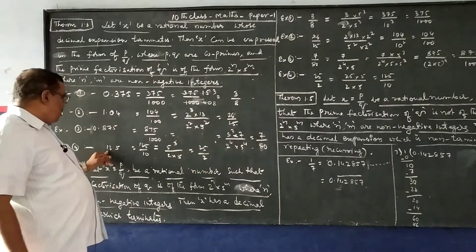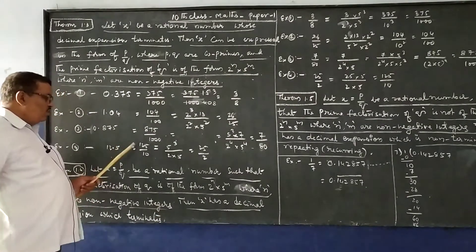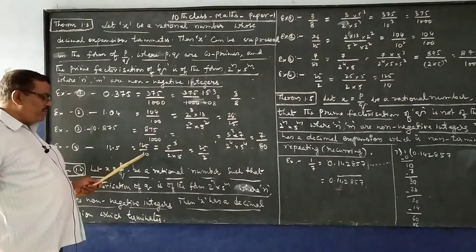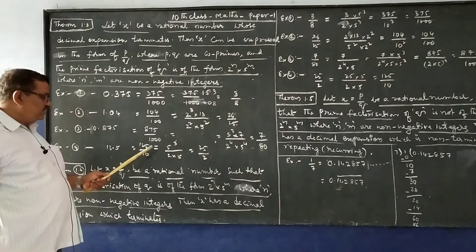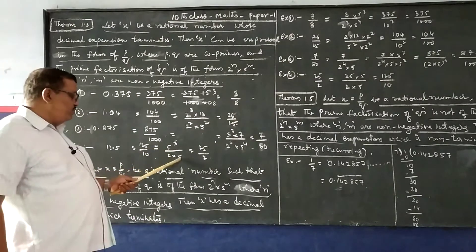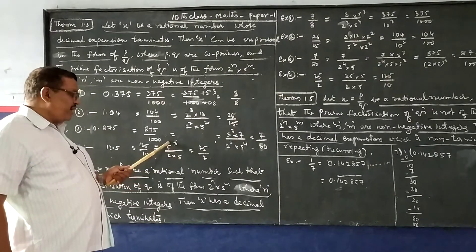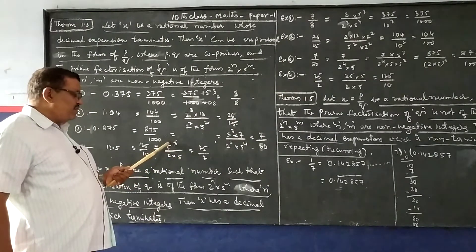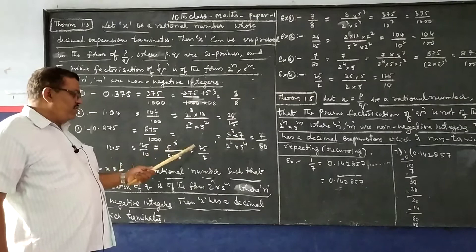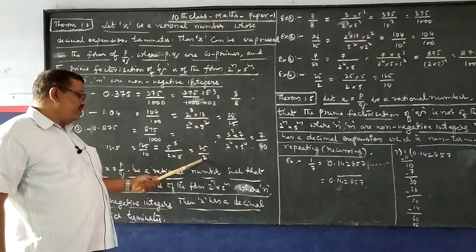Example 4: 12.5 equals 125 by 10, which is 5³ by (2 × 5). After cancellation, 5² remains, giving 25 by 2.